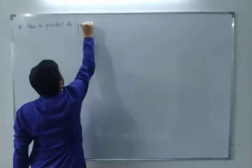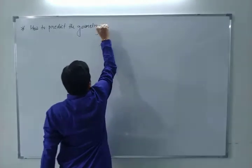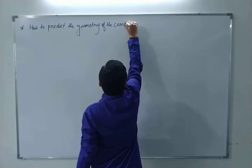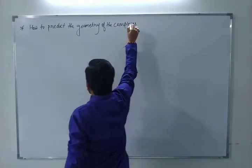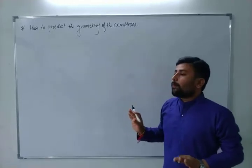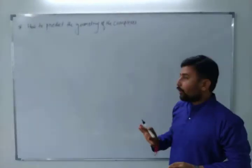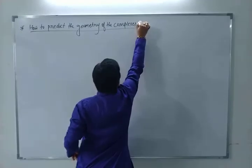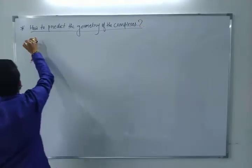Our main topic today is how to predict the geometry of complexes. I hope all of you understood the previous video on valence bond theory. I am giving you one question — the first question is [Fe(CN)6] with K4.